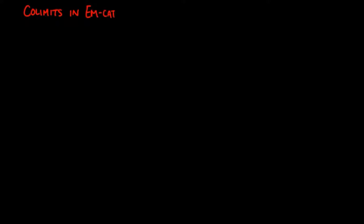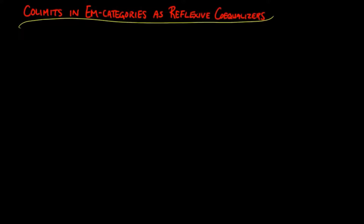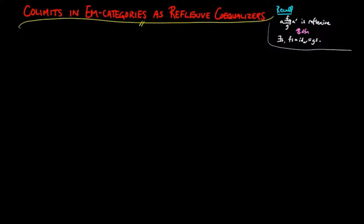In this video, we show how to construct co-limits as reflexive co-equalizers in the Eilenberg-Moore categories over a co-complete category. Recall that a pair of morphisms F, G is a reflexive pair if and only if F and G have a common section S.